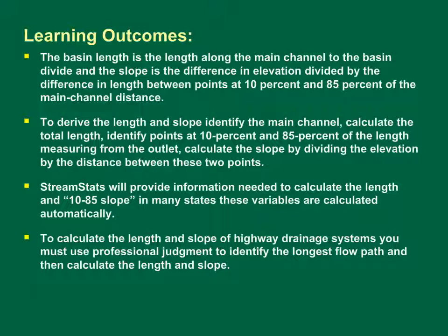In this training module, we learned that the basin length is the length along the main channel to the basin divide, and the slope is the difference in elevation divided by the difference in length between points at 10% and 85% of the main channel distance. To derive the length and slope: identify the main channel, calculate the total length, identify points at 10% and 85% of the length measuring from the outlet, and calculate the slope by dividing the elevation difference by the distance between these two points. StreamStats will provide information needed to calculate the length and 10-85 slope; in many states, these variables are calculated automatically. To calculate the length and slope of highway drainage systems, you must use professional judgment to identify the longest flow path and then calculate the length and slope.